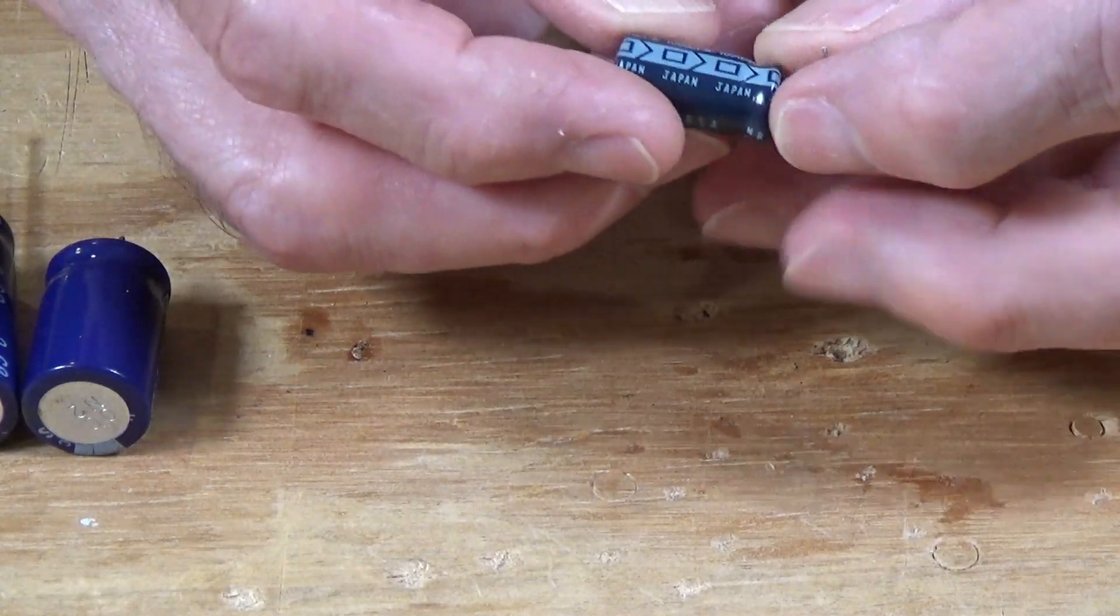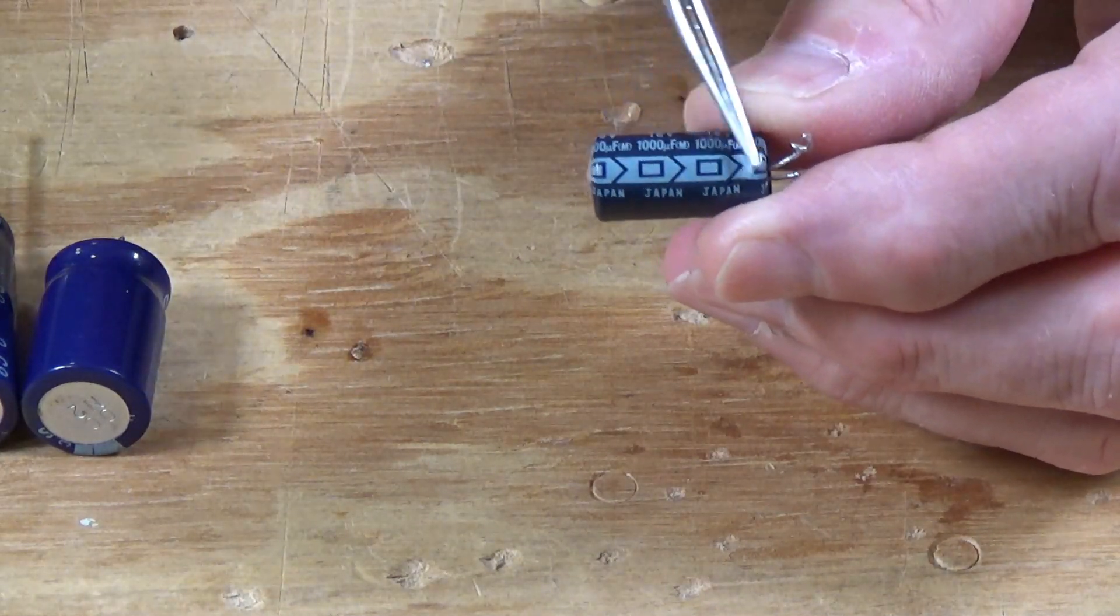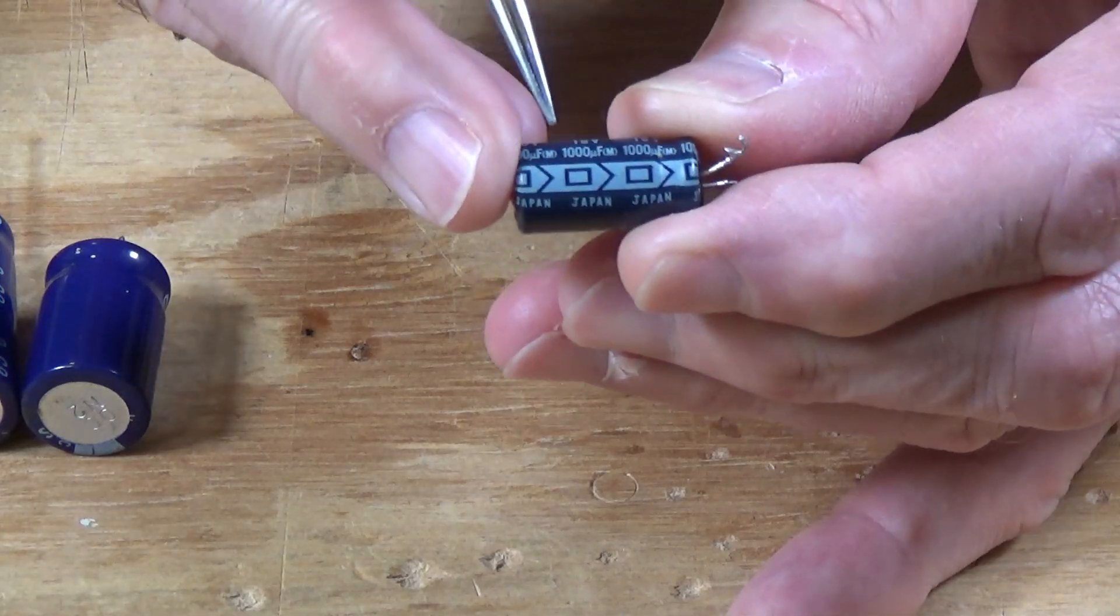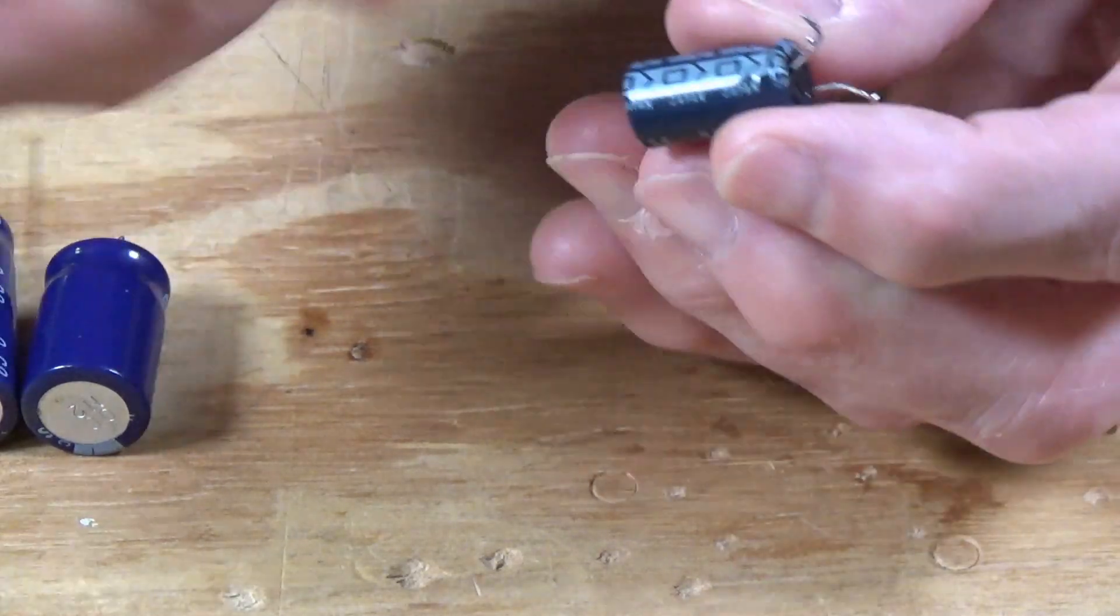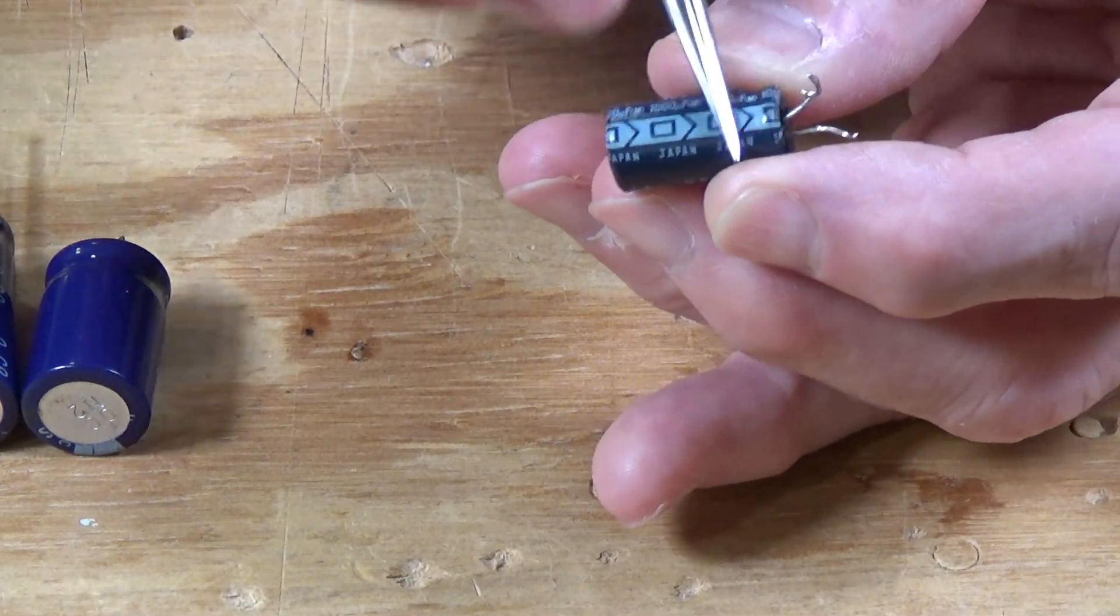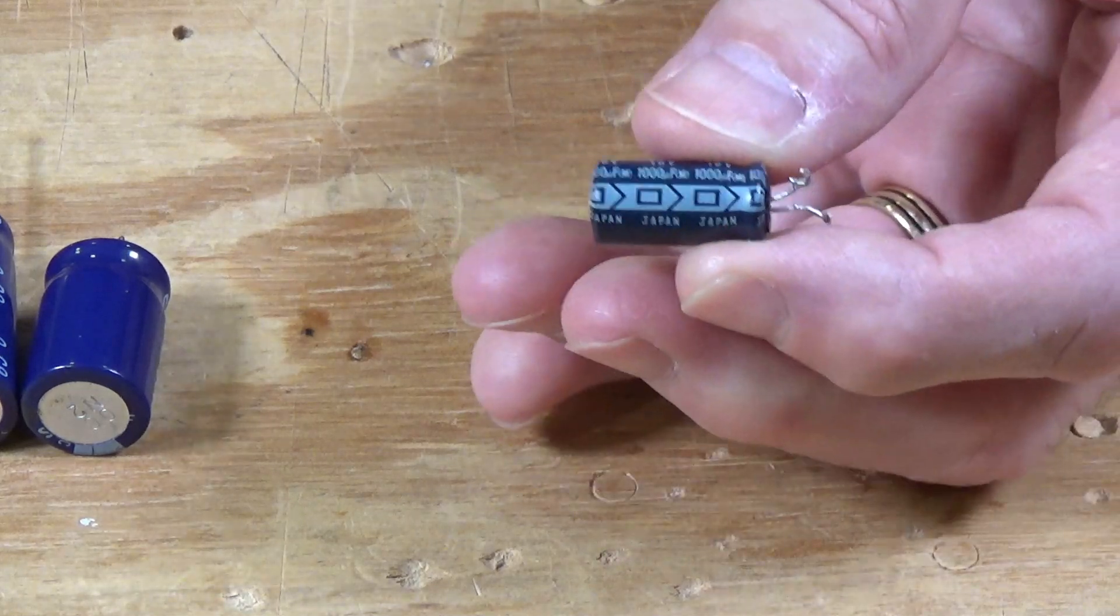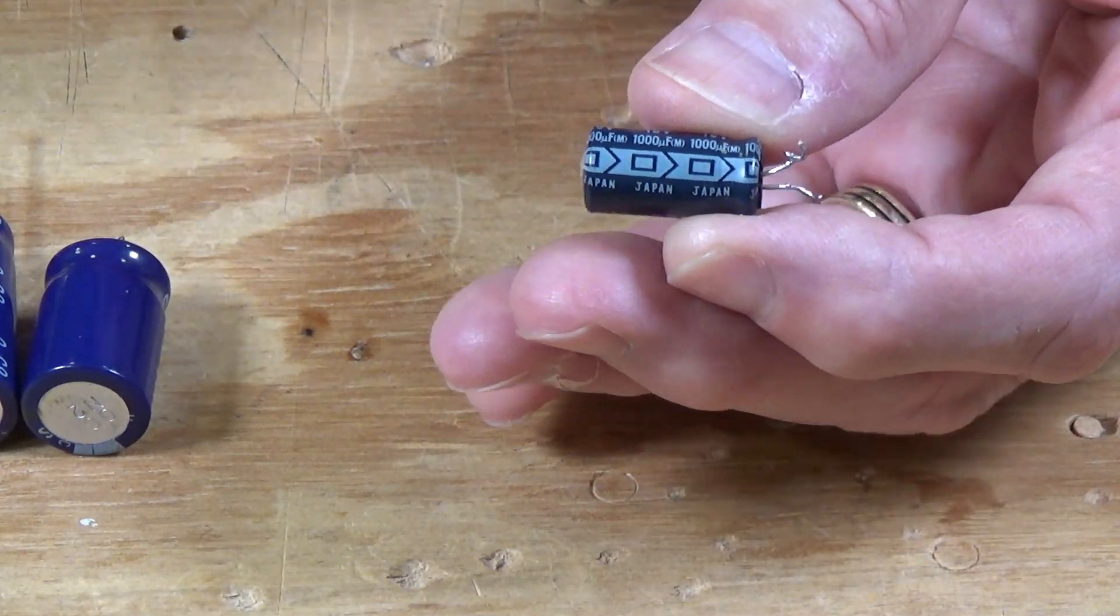And note here that in all of these, we have this bold white stripe printed here. And on that bold white stripe, there are these little negative signs. That indicates that this leg right here is negative. So these are a polarized component, just like an LED is polarized and has a positive and a negative.